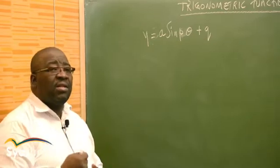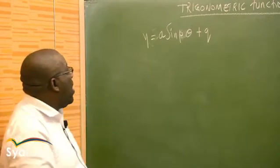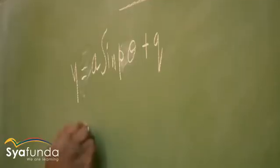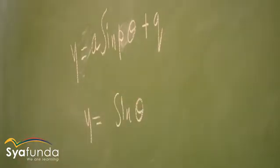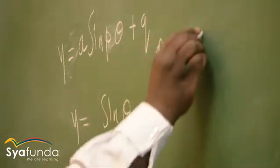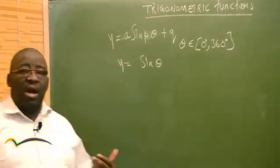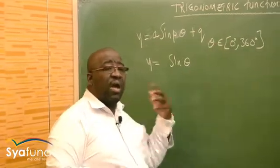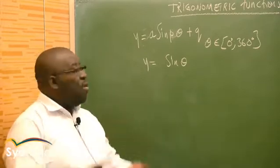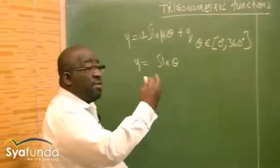For now, I just want us to understand the mother graphs first, before we move them along the x-axis or up and down along the y-axis. I call these mother graphs because these are the original graphs before they are shifted. For all three graphs, I want us to use the interval of 0 to 360 degrees. The next graphs we'll sketch will be the tan graph, then the cosine graph.